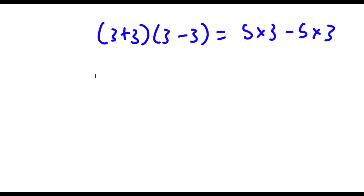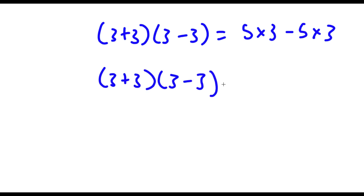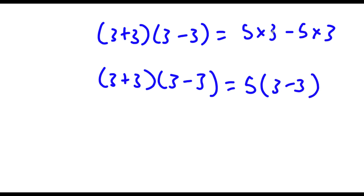So that gives us 3 plus 3 times 3 minus 3 is equal to 5 times 3 minus 5 times 3. Now from my right hand side, I'm going to factor out 5. So if I factor out 5, I get 5 times 3 minus 3. All I did was divide 5 times 3 by 5 to get 3, and negative 5 times 3 divided by 5 is negative 3, so that's how I got 5 times 3 minus 3.